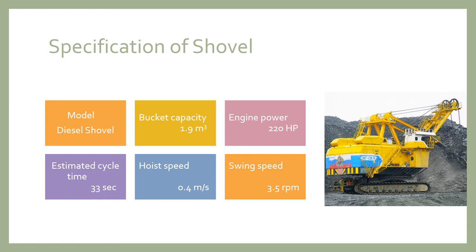Next is the specification of the diesel shovel. The bucket capacity is 1.9 meter cube. Engine power is 220 horsepower. Estimated cycle time is 33 seconds. Crowd speed is 0.4 meters per second, and swing speed is 3.5 rpm.